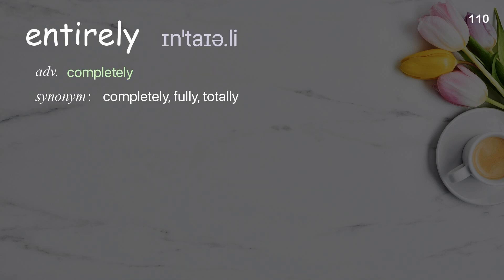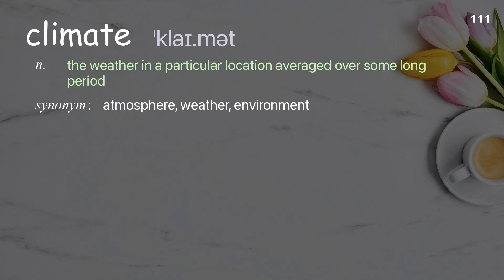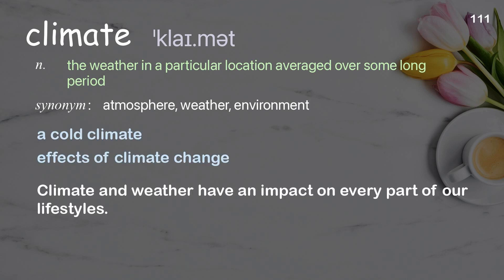Entirely: completely, wholly. Climate: the weather in a particular location averaged over some long period. Examples: a cold climate, effects of climate change. Climate and weather have an impact on every part of our lifestyles.